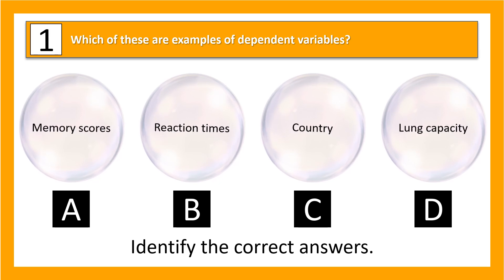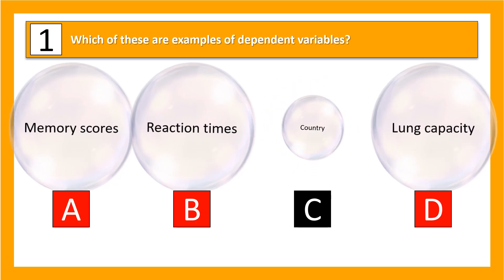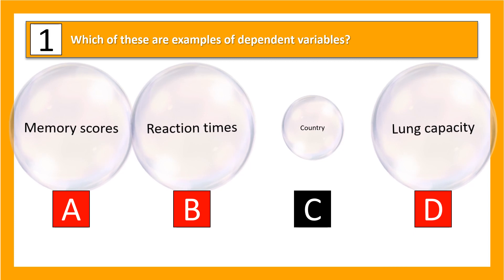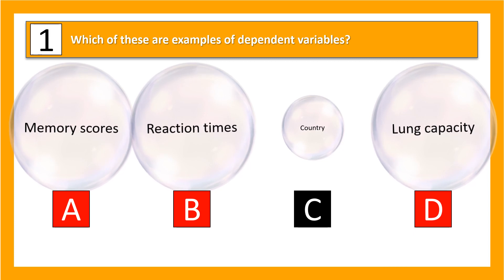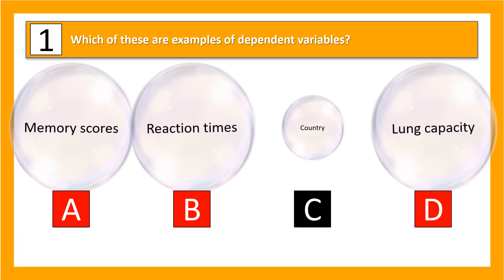Memory score is something I could measure; reaction times is something I could measure; as is lung capacity. Country, however, isn't likely to be a dependent variable — we can't change it — but it may well be an independent variable.